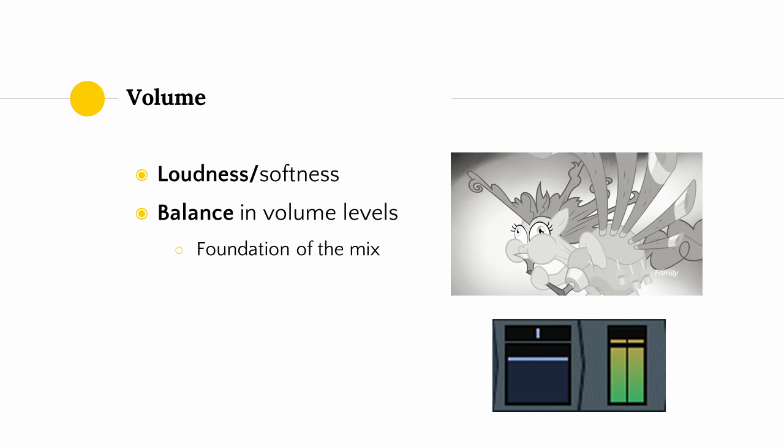Volume is simply how loud or how soft a sound is. Every DAW should have some kind of fader option for adjusting the volume of a track. One of the most basic aspects of audio mixing is getting the right balance in volume levels. In fact, some people say that this is 80% of the mixing process. Simply setting your tracks to sit at a good volume relative to each other will give you a good foundation for any additional mixing you want to do.